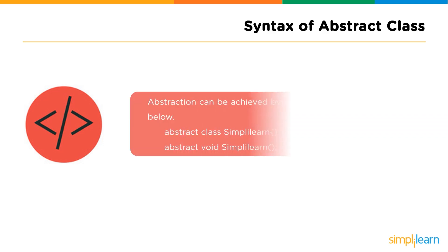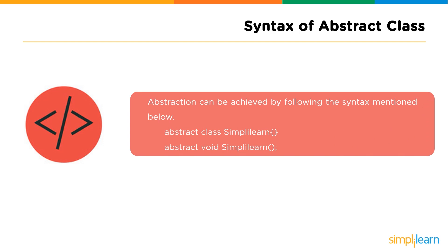To declare an abstract class, we use the keyword 'abstract' followed by the keyword 'class', then the name of the class — the name is the user's choice, for example I have named mine 'simplyLearn'. To declare an abstract method, we use the keyword 'abstract', then the return type — I have used void — then the method name, which I have also named 'simplyLearn'. This was the abstract class and method syntax.